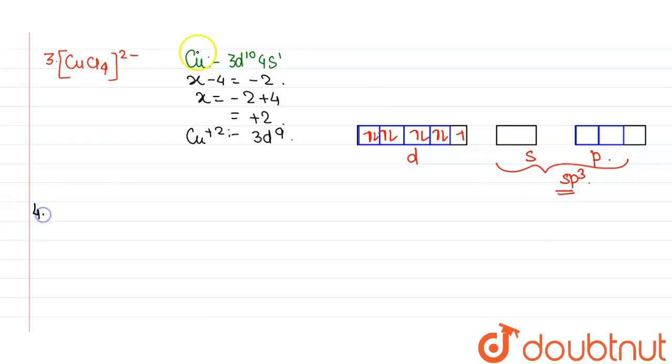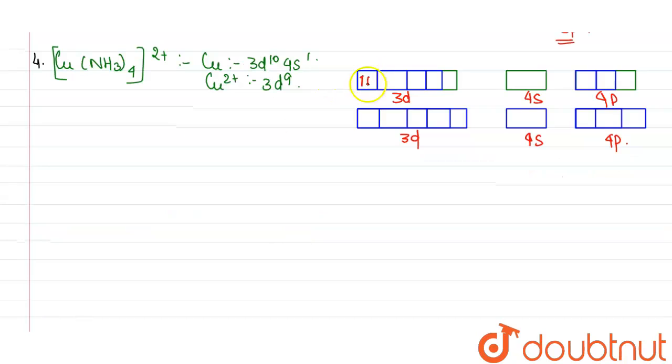Again the outer electronic configuration of Cu is 3d10 4s1. But now copper is in plus 2 oxidation state, so it will be 3d9. Now again if we fill the 9 electrons in this d orbital, it will be like this.